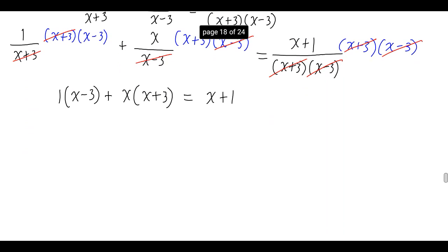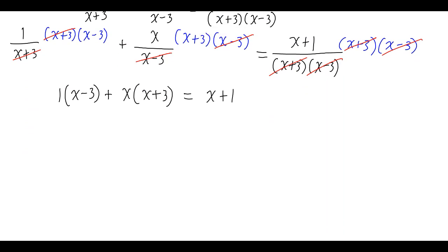Let's simplify this if we can. Distribute the 1 to get x minus 3, distribute the x to get x squared plus 3x. This equals x plus 1. Let's combine like terms on the left side. x squared plus 3x will give me 4x minus 3 equals x plus 1.